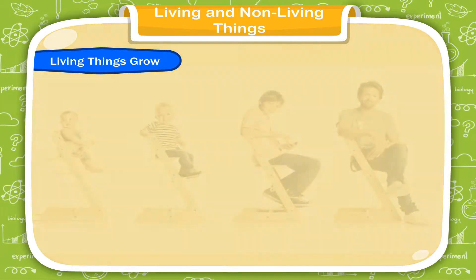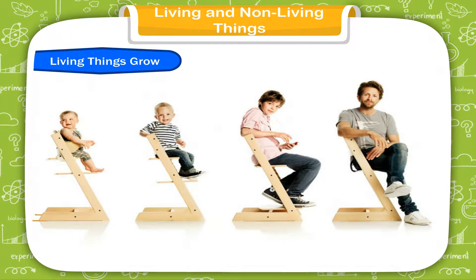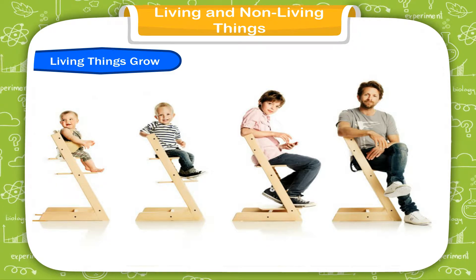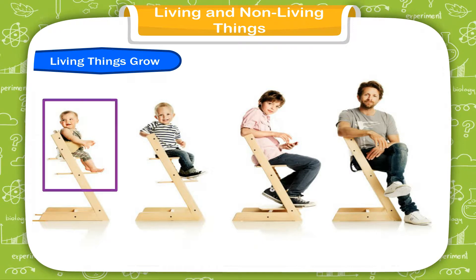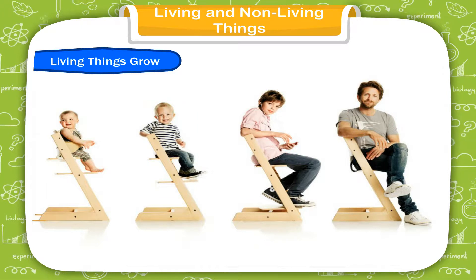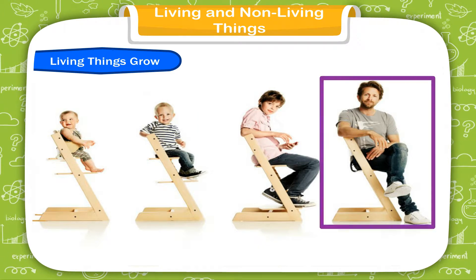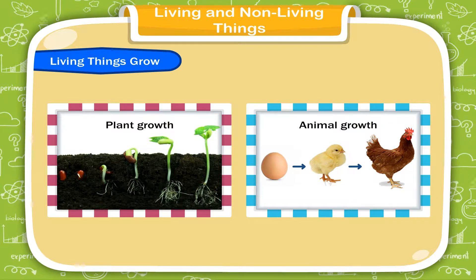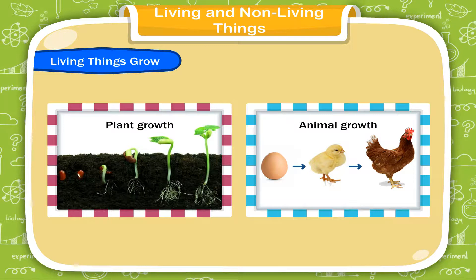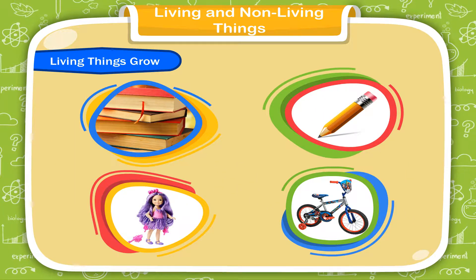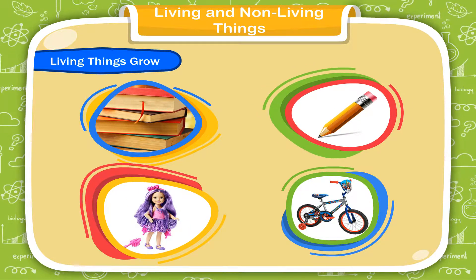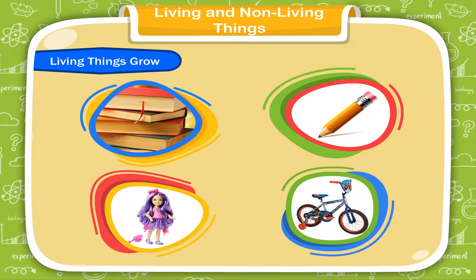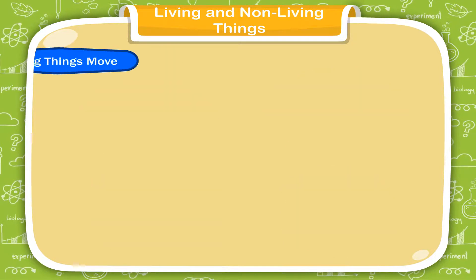Living things grow. All living things grow. Observe a photograph of yourself when you were born — you can see a very small baby in that picture. Compare the picture with your present self. When you were born, you were very small. Since then, you have been growing continuously. After some years, you will grow into an adult. Like us, plants and animals also grow. Seeds grow into plants and chicks grow into cocks or hens. Non-living things such as your book, pencil, doll or bicycle do not grow at all.